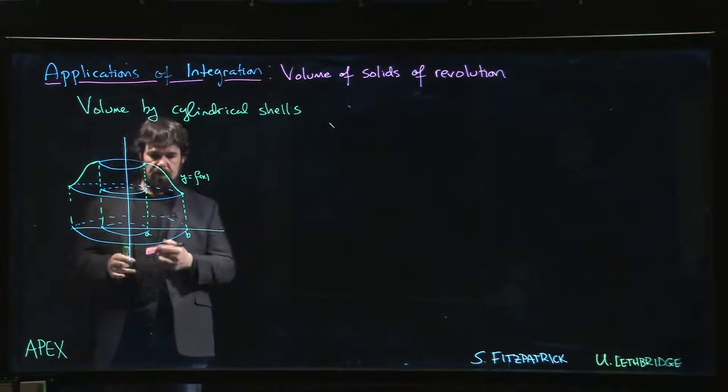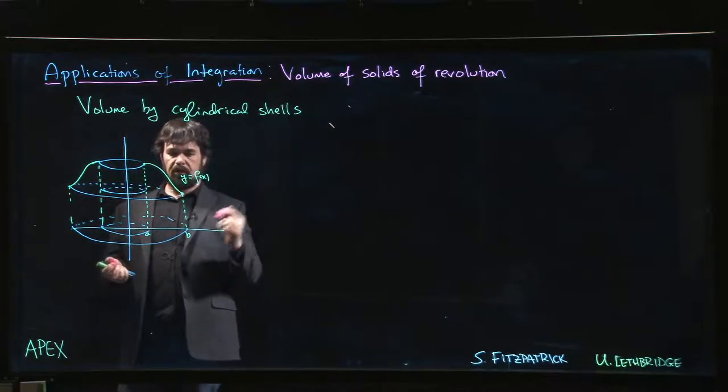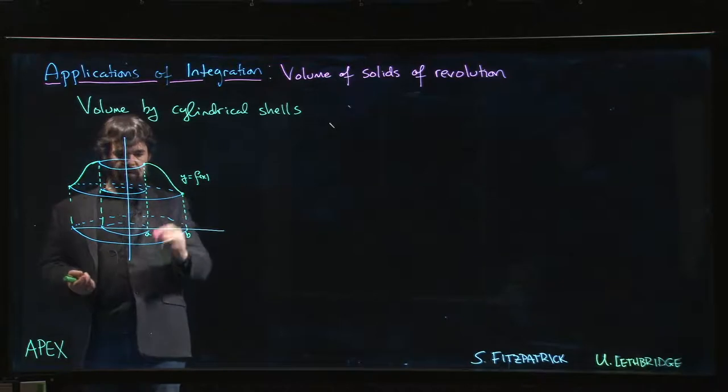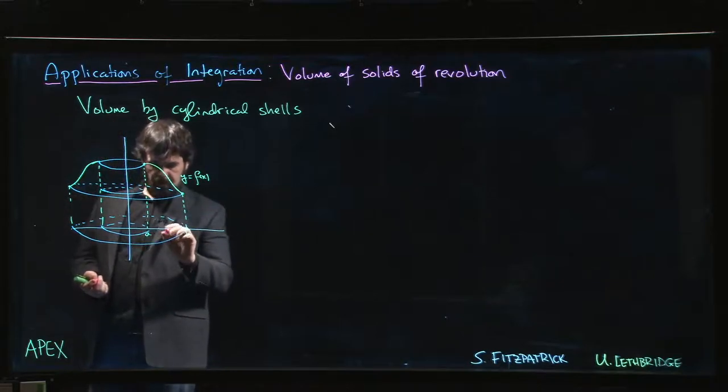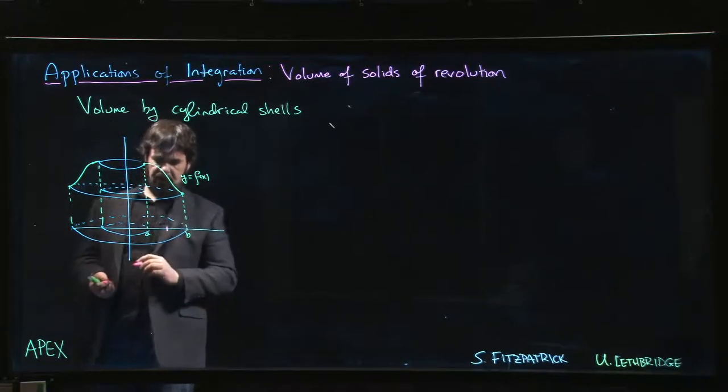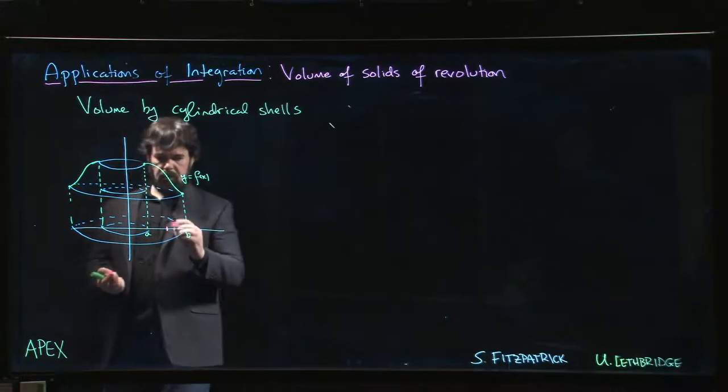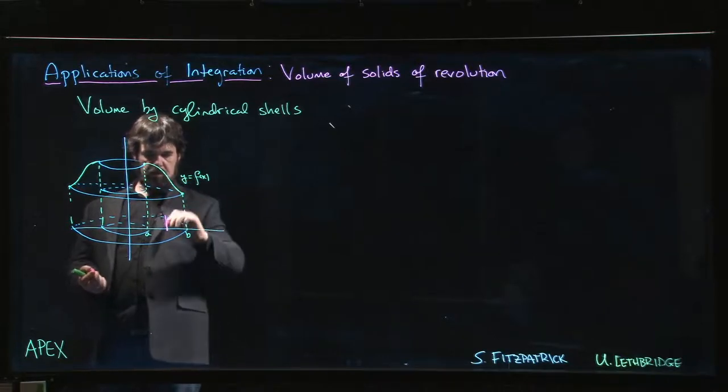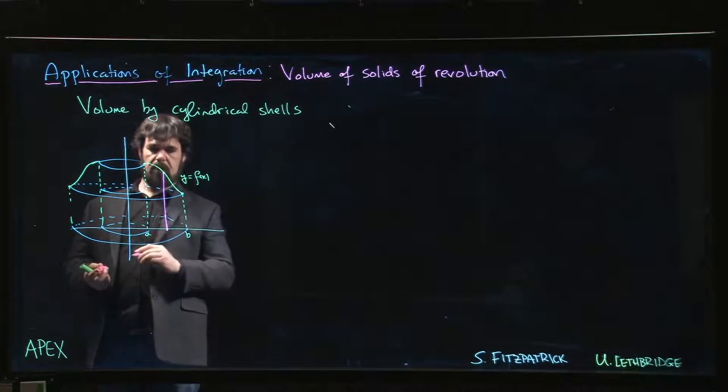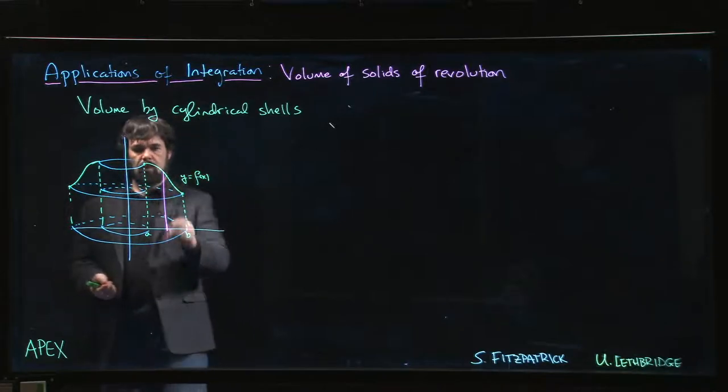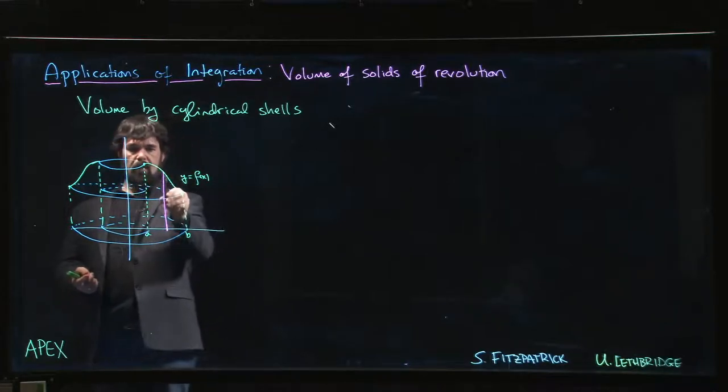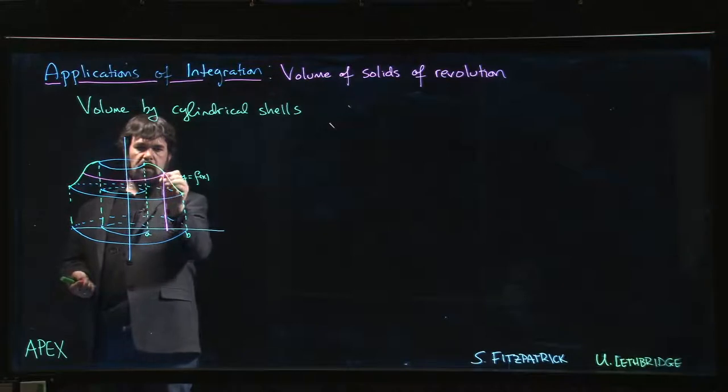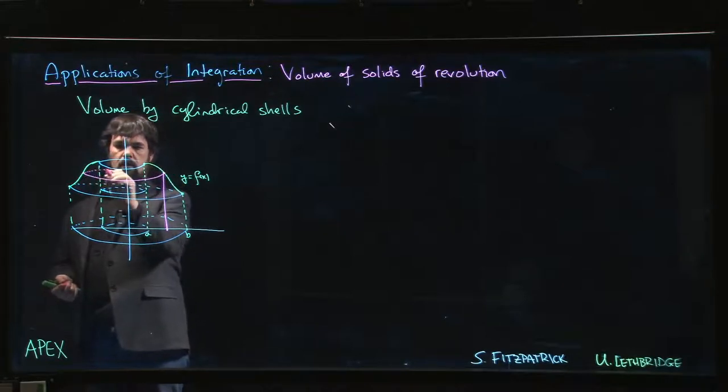We could do it in two pieces and patch them together, but it turns out there is another method you can use: the cylindrical shell method. Rather than doing washers and integrating with respect to y, we're going to do shells and integrate with respect to x. We choose a particular x value, travel up until we hit the curve, and imagine taking this vertical line segment and revolving it about the axis.